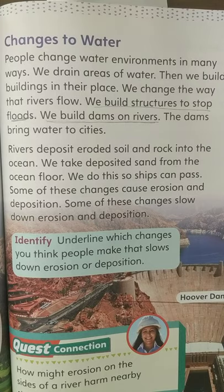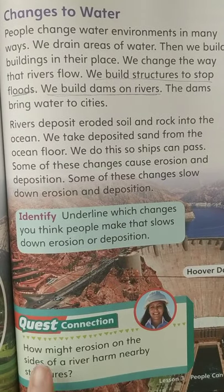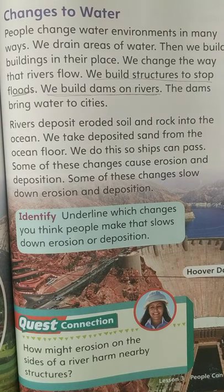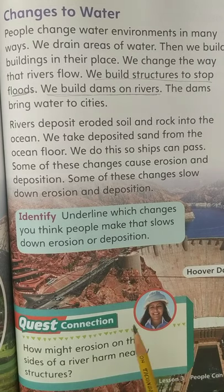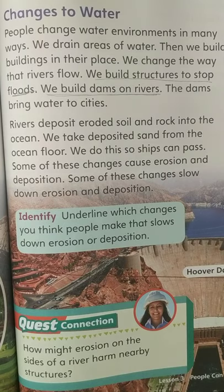How might erosion on the sides of a river harm nearby structures? If you have a river and the sides are starting to erode, we know that it could probably flood with water. If the river overflows and is eroding on the sides, then the river can flow out and destroy whatever buildings are next to it — so that could be a cause, flooding the area around it.